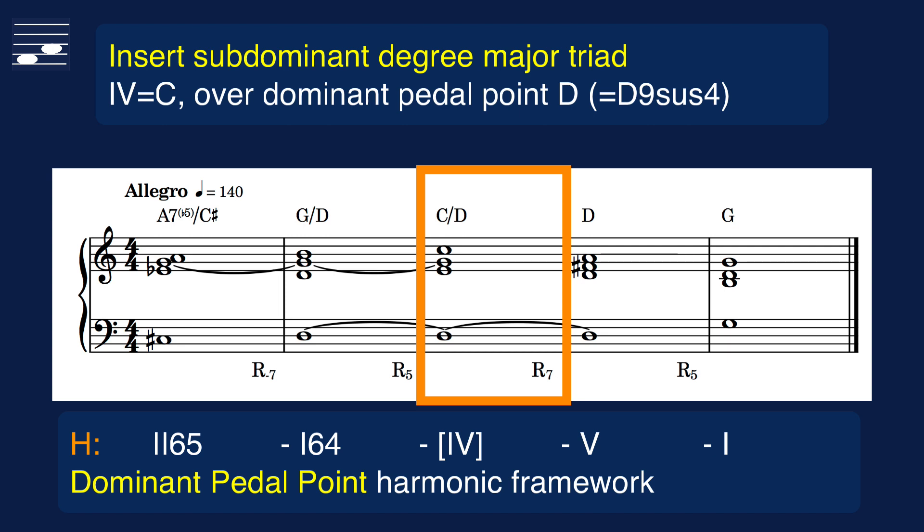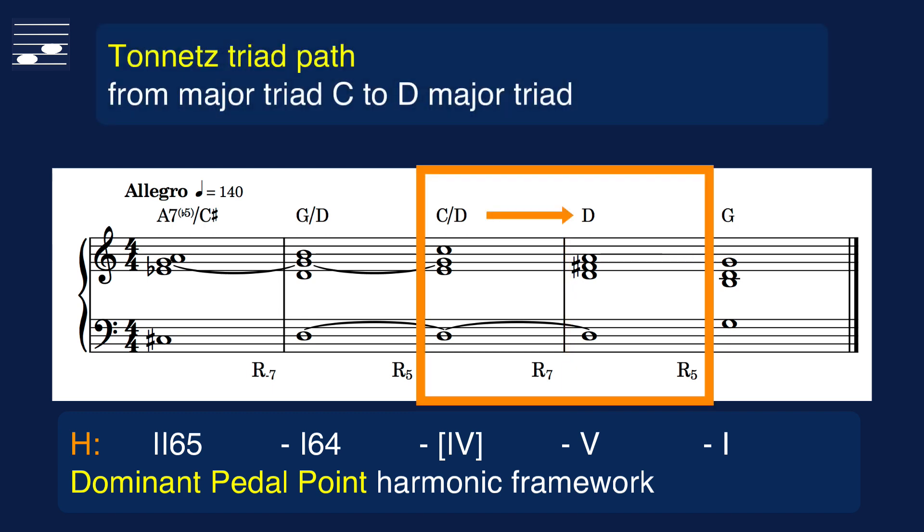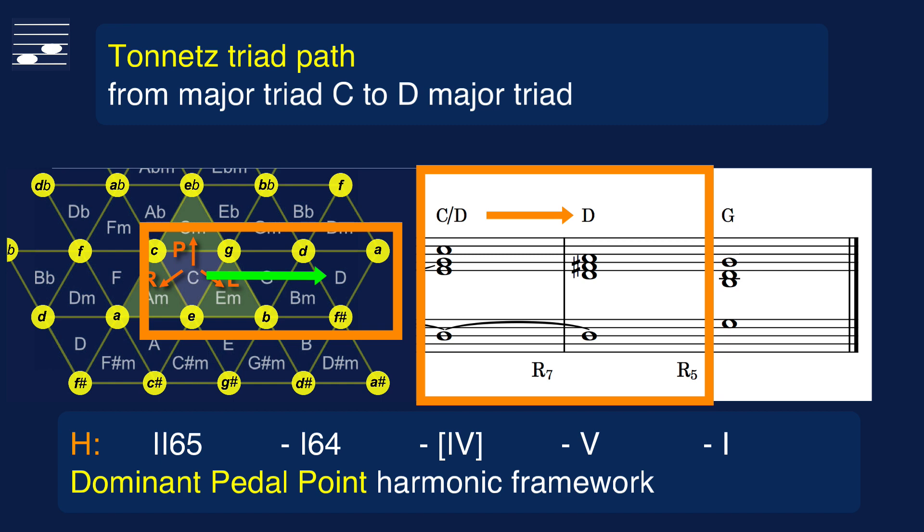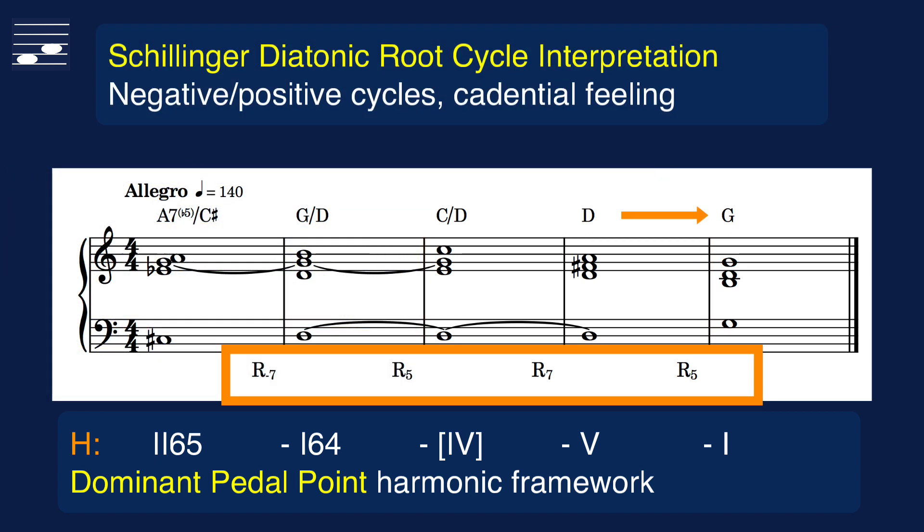which is equivalent to the D dominant 9 sus4 chord. The purpose of this tutorial is to find alternative ways to get from the C to the D triad in the Tornetz. The Schillinger root cycle labels tell us something about chord progression stability and cadential feeling. G to C is an R5 root movement, since the root leaps down a fifth. C to D is a descending seventh, while we see the familiar dominant to tonic R5 cadential closing.